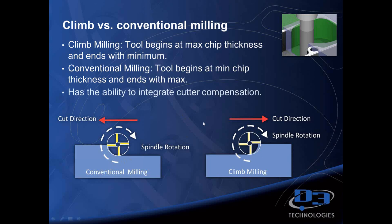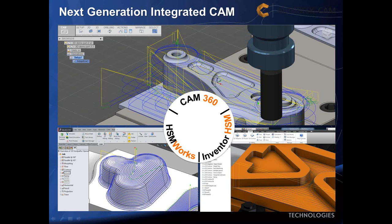We're also able to integrate cutter compensation. I saw before we even got started, one gentleman had a question about posting out G41 and G42 codes. The software does handle that with cutter compensation. Here's an image of the three different packages: Inventor HSM, HSMWorks, and SolidWorks, and at the top we have Fusion 360 with the CAM software.